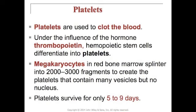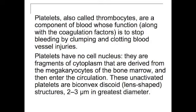Hemopoietic stem cells differentiate into platelets. Megakaryocytes in the red bone marrow splinter into 2,000 to 3,000 fragments to create platelets, which contain many vesicles but no nucleus. Platelets can survive for about five to nine days. Platelets are a component of blood whose function, along with coagulation, is to stop bleeding by clumping and clotting blood vessel injuries. Platelets have no cell nucleus — they are fragments of cytoplasm derived from megakaryocytes of the bone marrow.